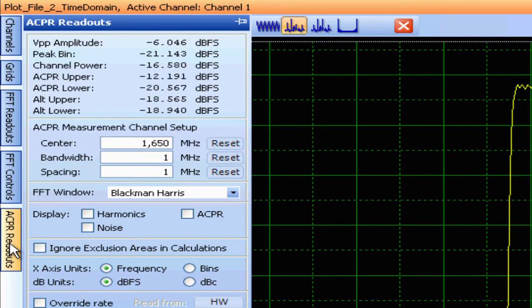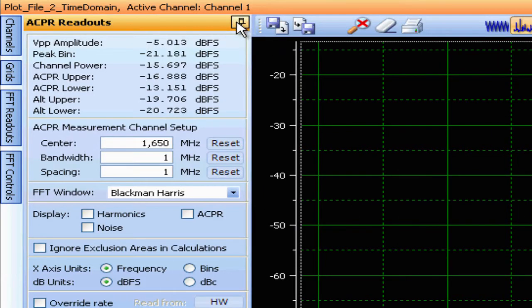On the left hand side of the screen is a tab called ACPR readouts. So first of all you go ahead and just select that. And then in order for this tab to remain open, at the top right there is a pin, and you can just pin it open.